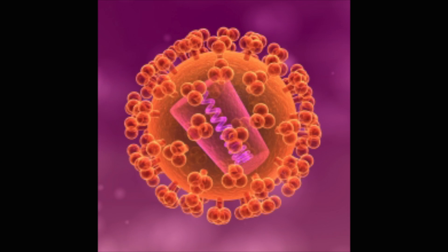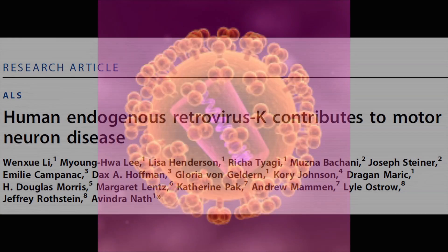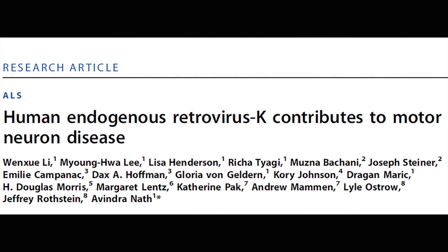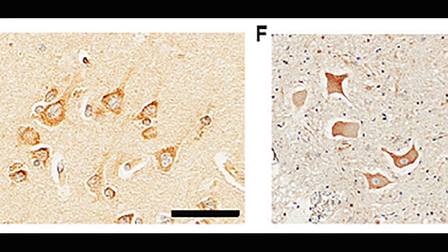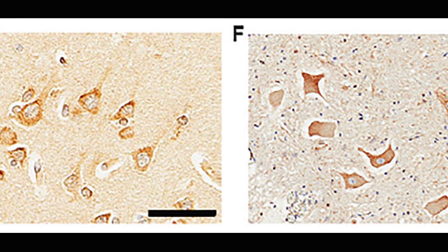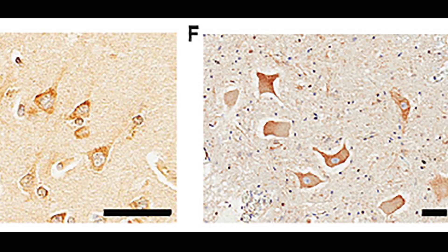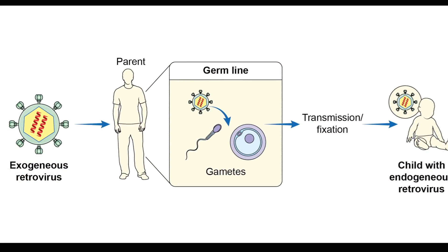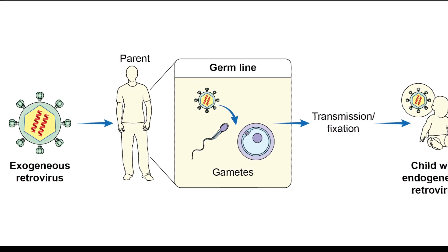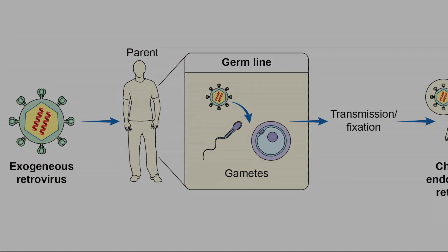ALS is such that almost 90% of patients die within less than five years. That made us wonder: is it possible that there may be some retrovirus involved in ALS itself? We found that patients who have ALS, when we looked at their brain samples, showed activation of a virus that is usually present in the human genome and remains dormant during adult life.